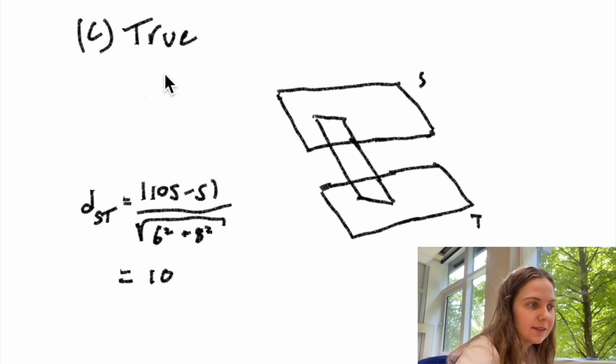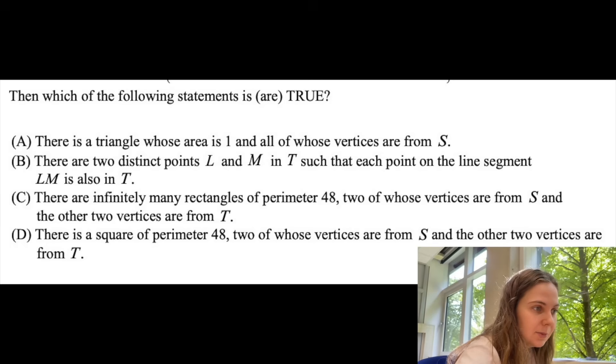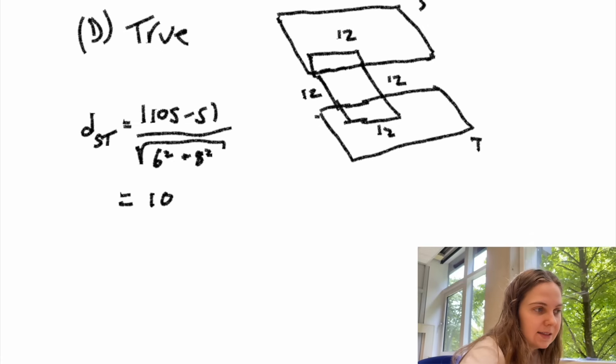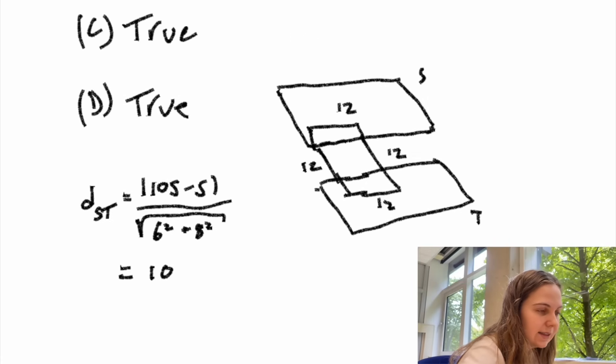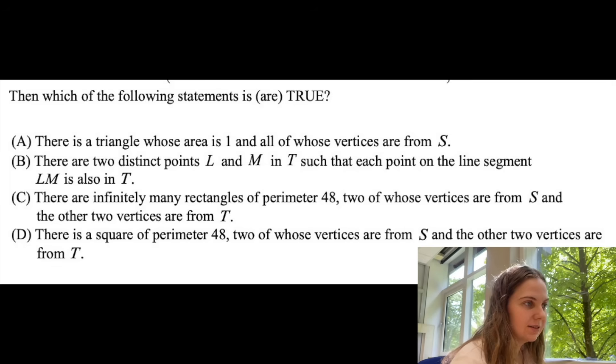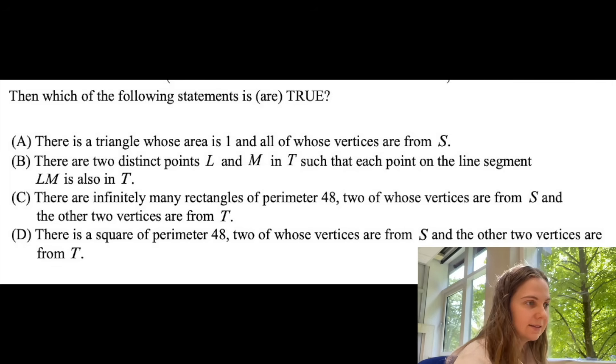Similarly for statement D: there is a square of perimeter 48, two of whose vertices are from S and the other two vertices are from T. This is very similar to statement C and we know that since the distance between S and T is just 10 we can quite easily tilt this square which has two vertices in S, two vertices in T and sides of length 12 such that the perimeter is 48. So D is also true meaning that the answer to question 7 is that all of the four statements listed were true.